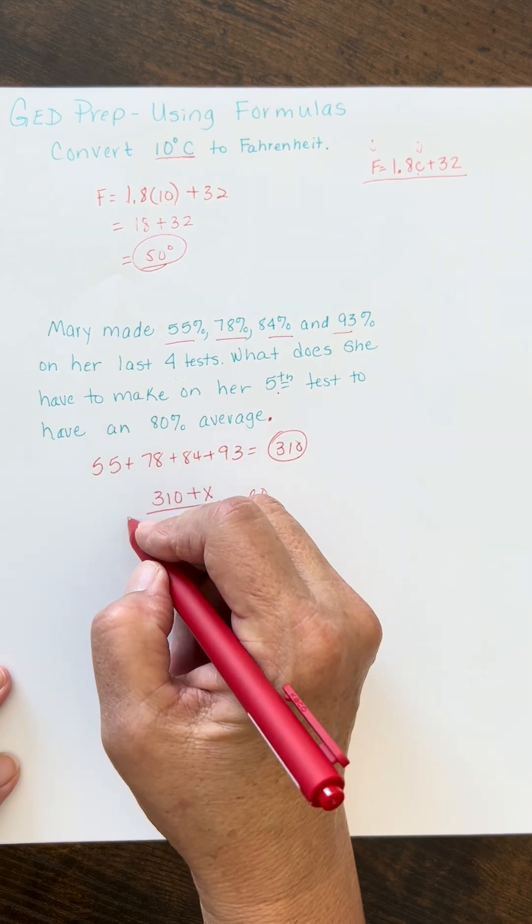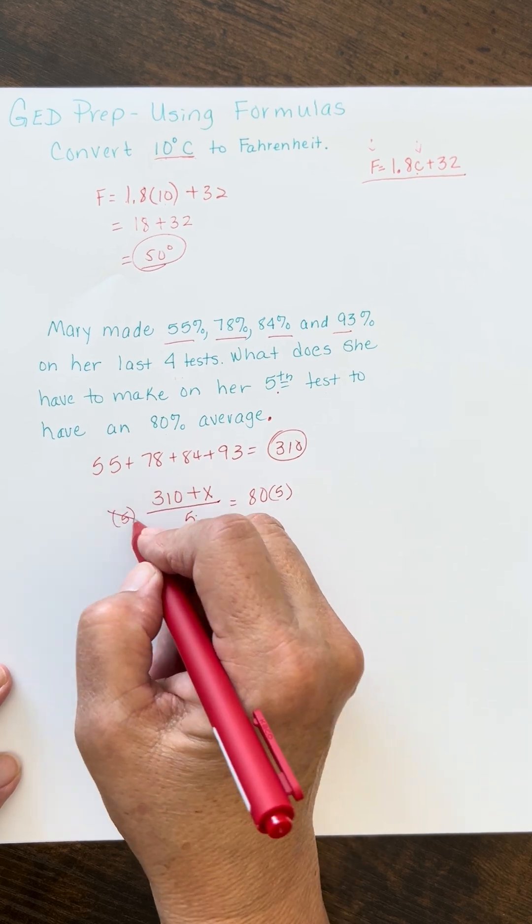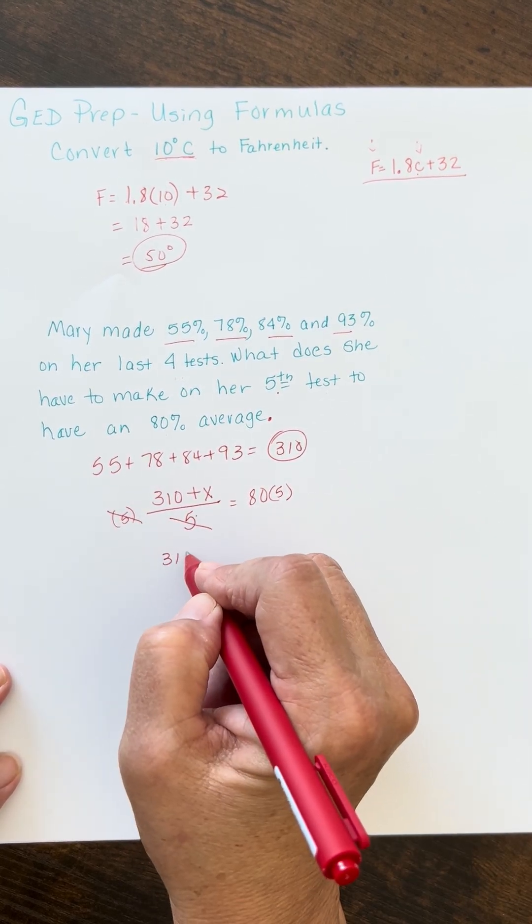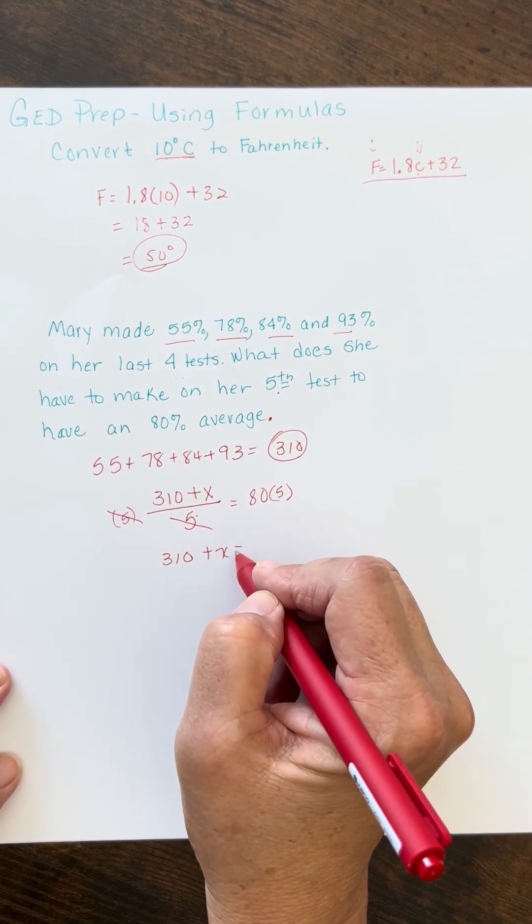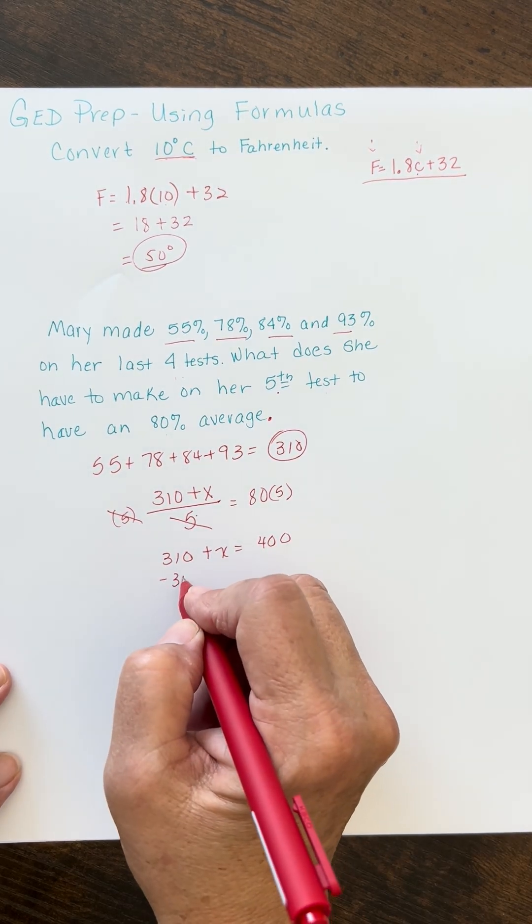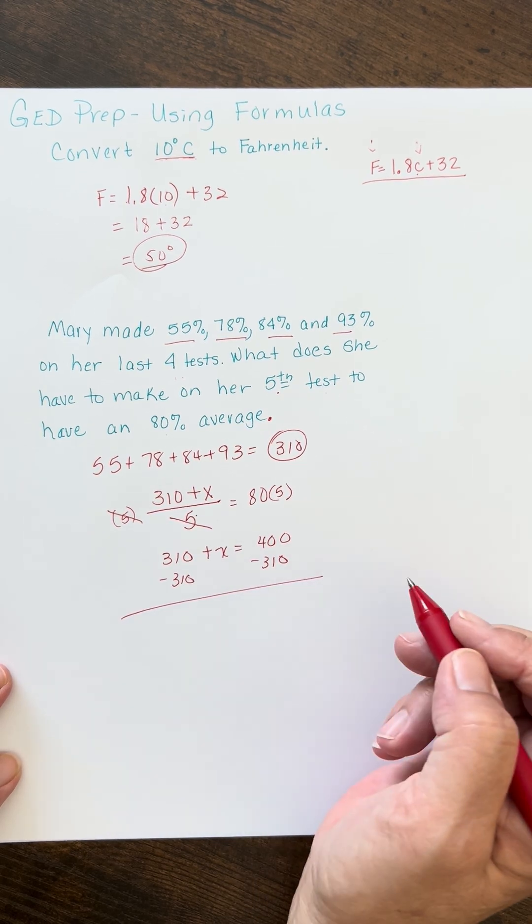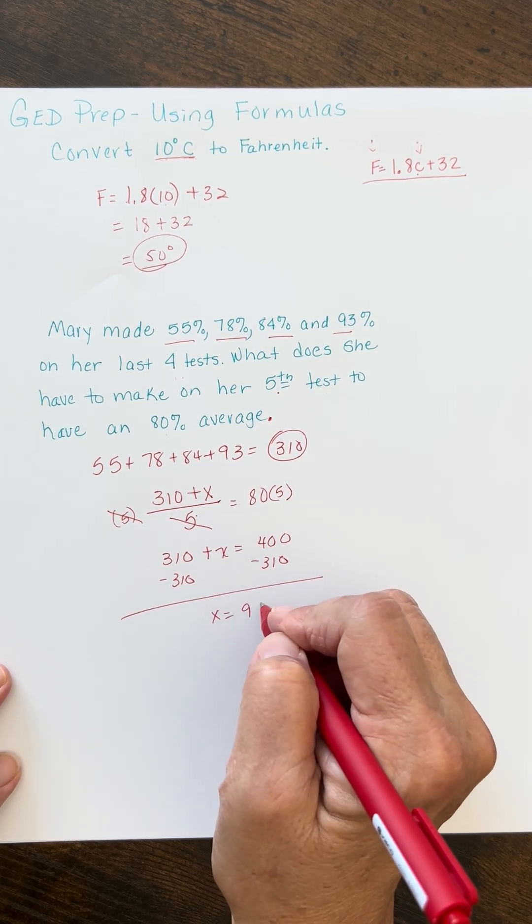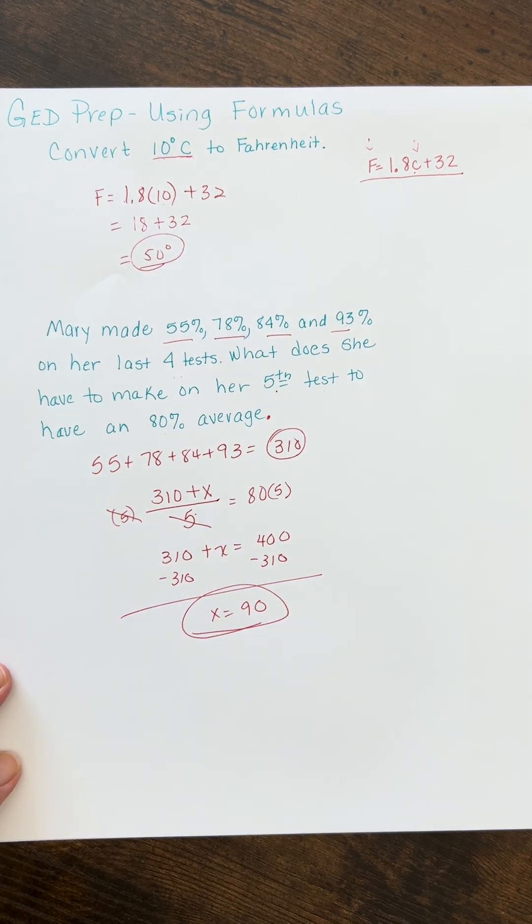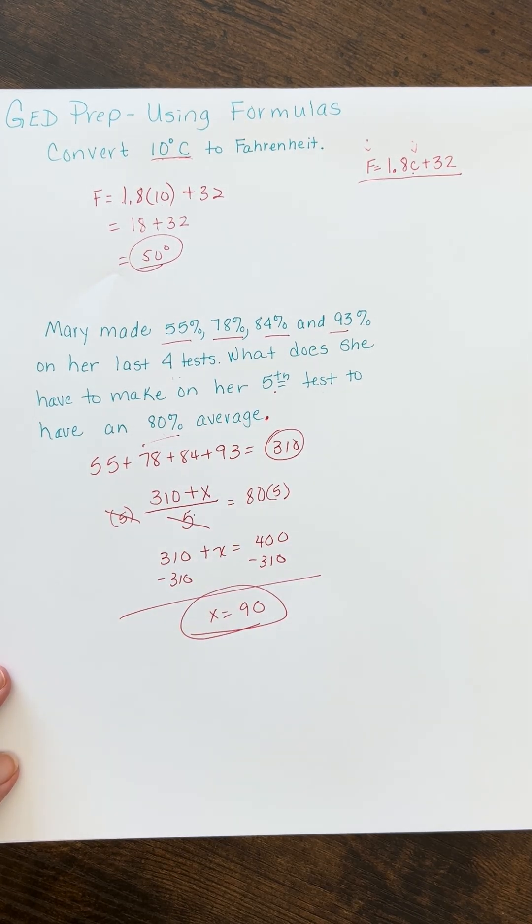To get rid of this 5, we could multiply both sides by 5. So, now, these two cancel. You have 310 plus X is equal to 400. Then, all you got to do is subtract the 310 points that you already have, or she already has, and that's going to tell you that she needs to make a 90 on her next test in order to have an 80% average.